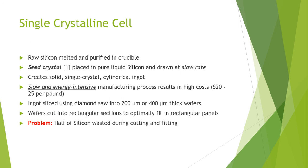The problem with single crystalline cells is that half of the silicon is wasted during the cutting and fitting process. The solution to this problem is to either grow silicon crystals into ribbons or make large round panels.